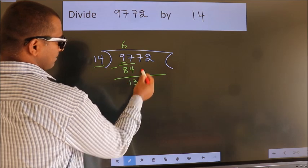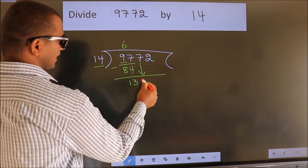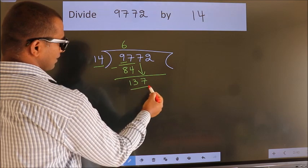After this, bring down the beside number. So 7 down. So 137.